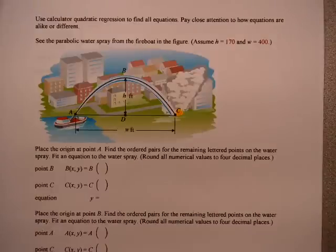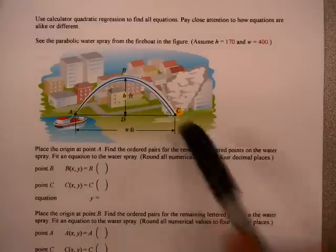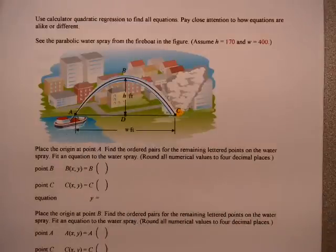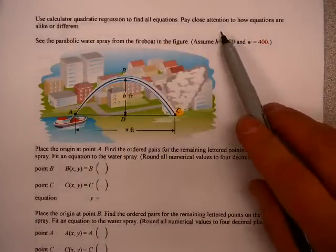I'd like to do an example of one of the more difficult problems given on the homework. It has to do with a fireboat that is spraying water onto a fire from a lake. Use calculator quadratic regression to find all equations. Pay close attention to how the equations are alike or different.